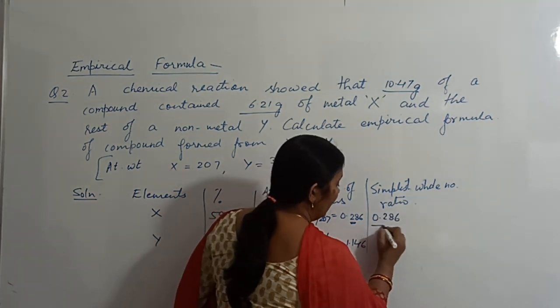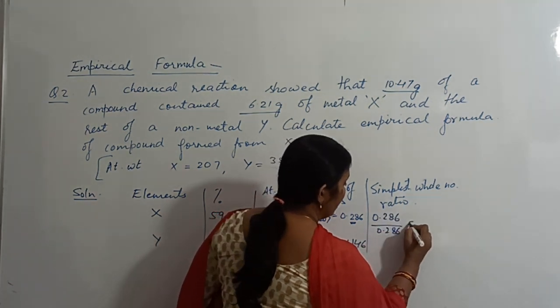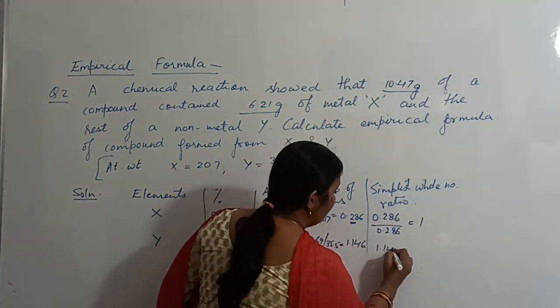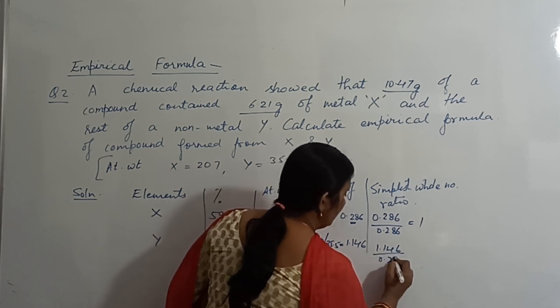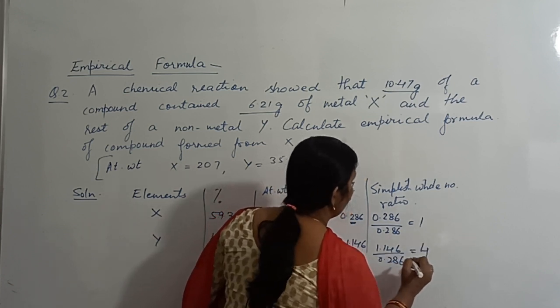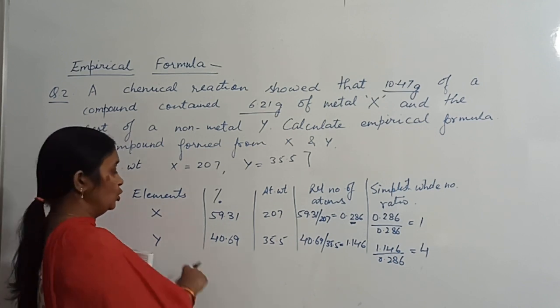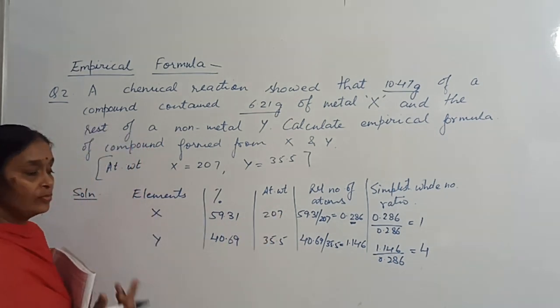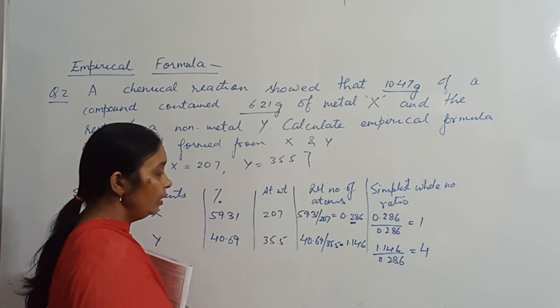That is 0.286 divided by 0.286, this will come as 1. 1.146 divided by 0.286, this will come as 4. So this is the simplest whole number ratio of X and Y, and this will provide you the empirical formula.